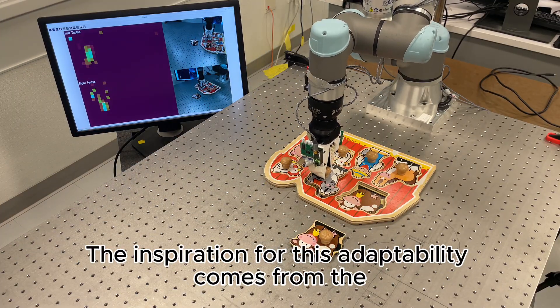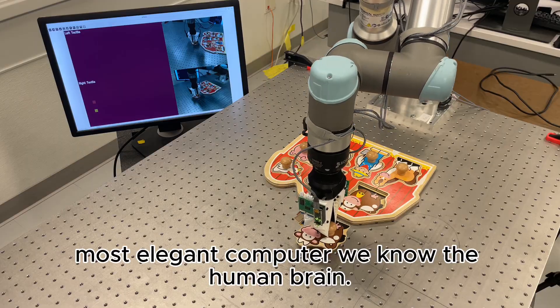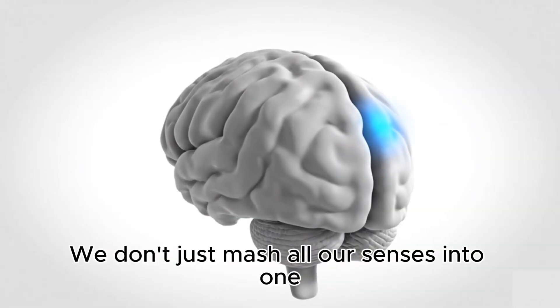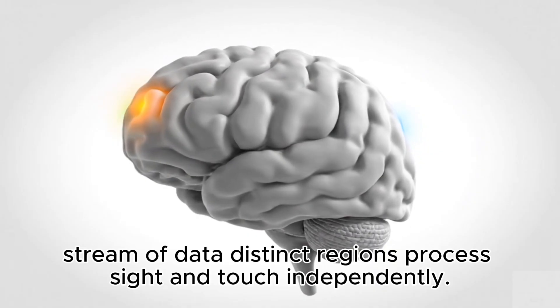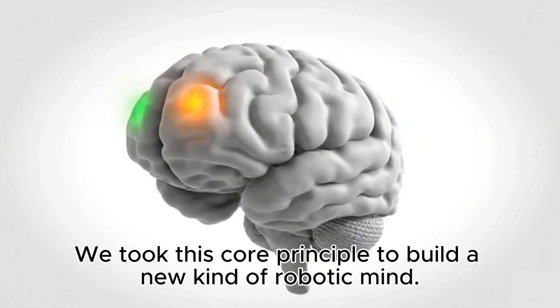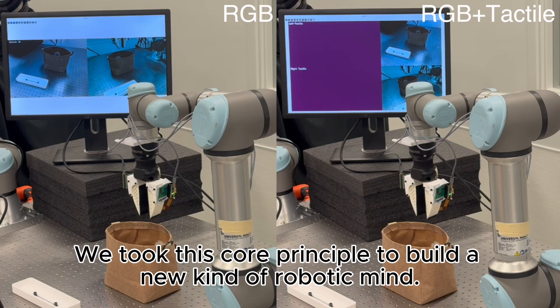The inspiration for this adaptability comes from the most elegant computer we know: the human brain. We don't just mash all our senses into one stream of data. Distinct regions process sight and touch independently. We took this core principle to build a new kind of robotic mind.